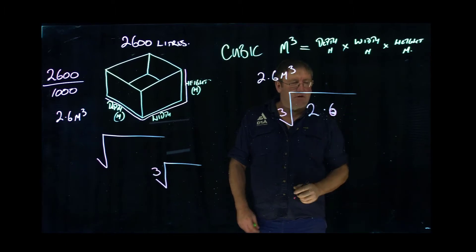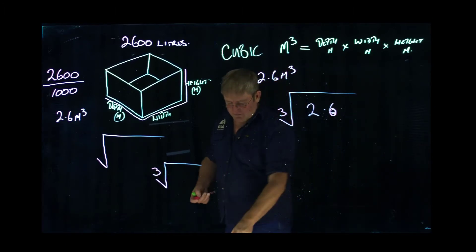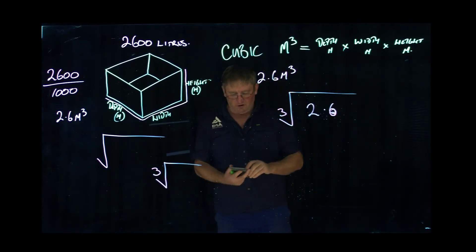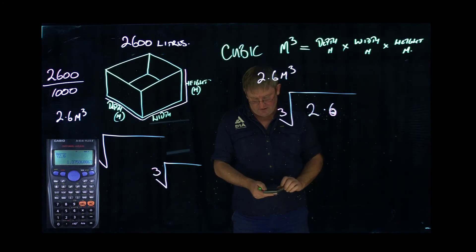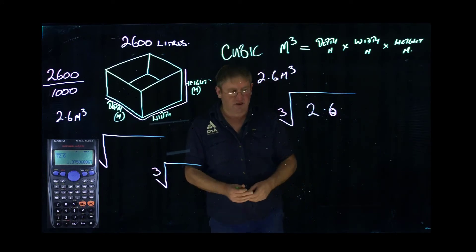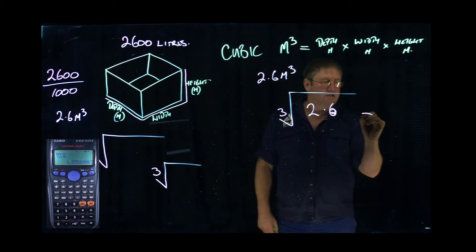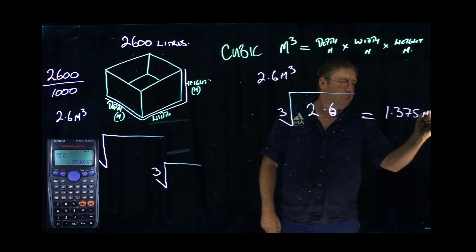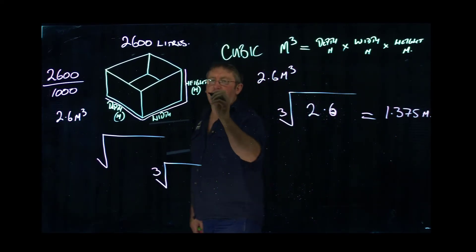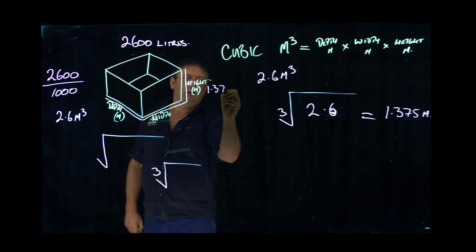That's a very rough 6, but if that's what you do on your calculator—I've already done it, I know the figure, but I'll do it again. The cube root of 2.6 gives me a length or size of 1.375, and that's in metres. So each face will be 1.375 metres.